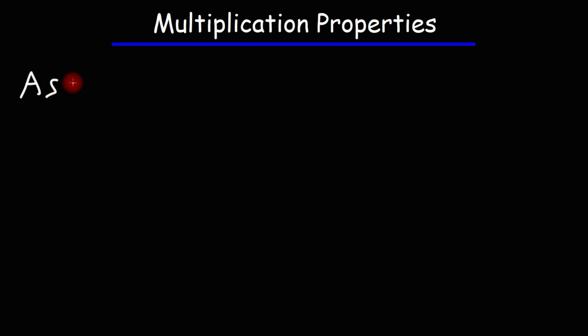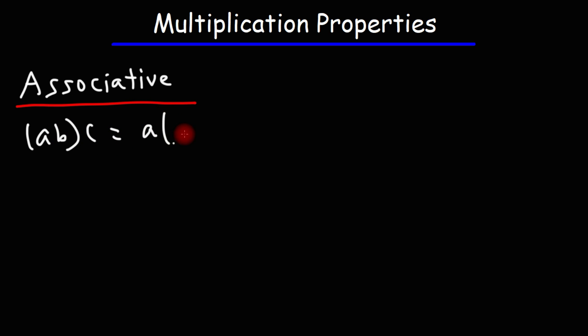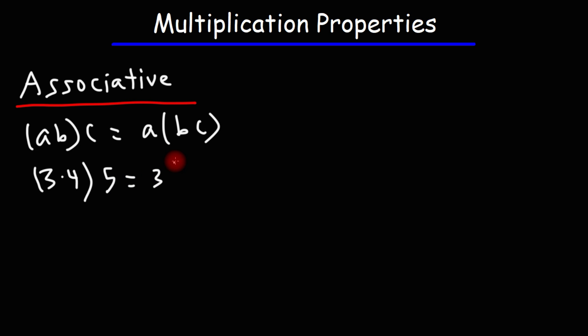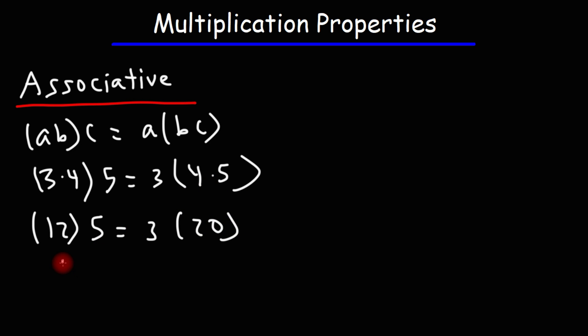Next up we have the associative property of multiplication. It's somewhat similar to the commutative property, but instead of multiplying two numbers a and b, you're multiplying three numbers: a, b, and c. The formula is (a times b) times c is equal to a times (b times c). So let's say a is 3, b is 4, and c is 5. Using PEMDAS and order of operations, we multiply the numbers inside the parentheses first. 3 times 4 is 12, and 4 times 5 is 20. Now 12 times 5 is 60, and 3 times 20 is also 60 — we get the same result.